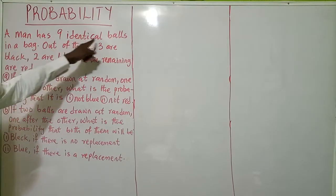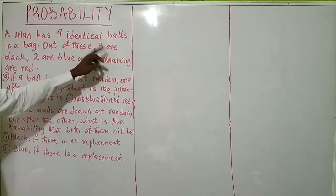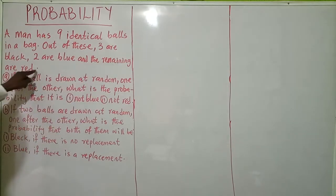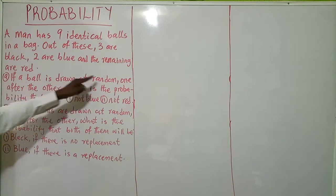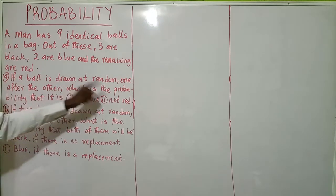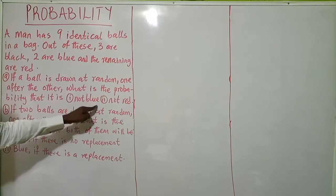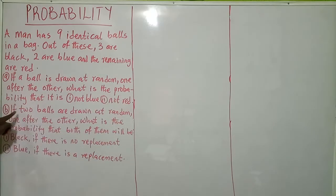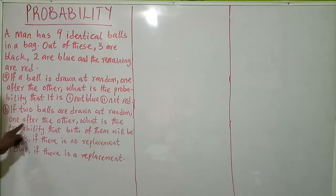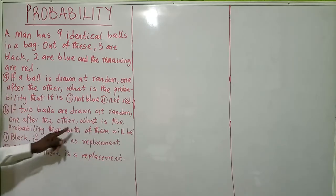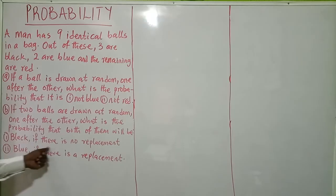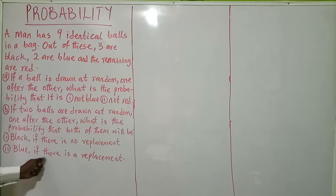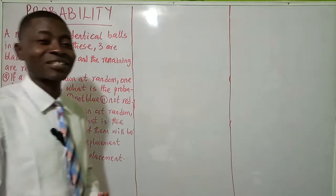We have a question that says a man has nine identical balls in a bag. Out of these, three are black, two are blue, and the remaining are red. Part a: if a ball is drawn at random, what is the probability that it is not blue, and not red? Part b: if two balls are drawn at random one after the other, what is the probability that both of them will be black if there is no replacement, and if there is a replacement?